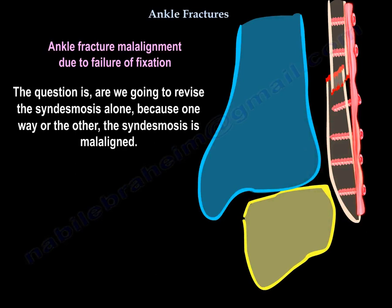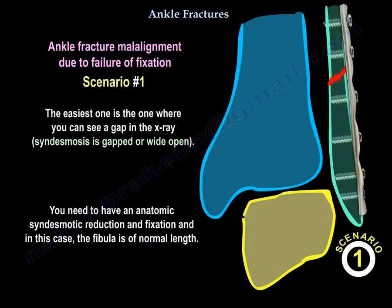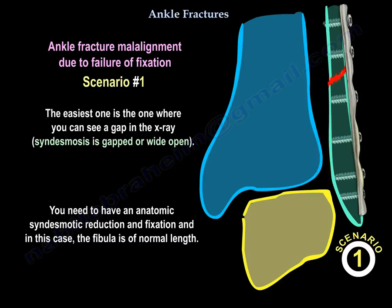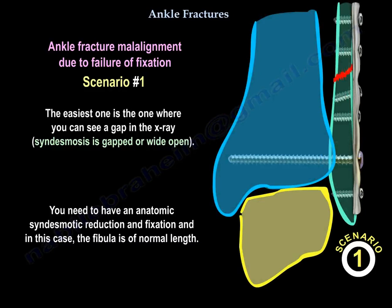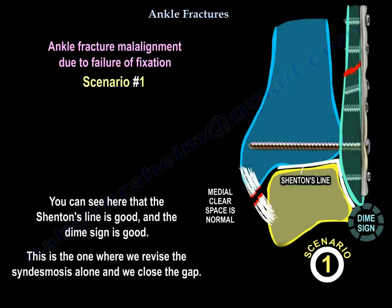The question is: are we going to revise the syndesmosis alone? Because one way or another, the syndesmosis is malaligned. The easiest case is where you can see a gap on x-ray — when the syndesmosis is wide open, you need anatomic syndesmotic reduction and fixation, and the fibula is of normal length. As you can see here, the Shenton line is good and the Dime sign is good.